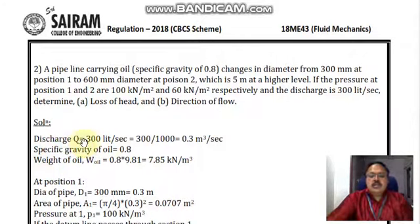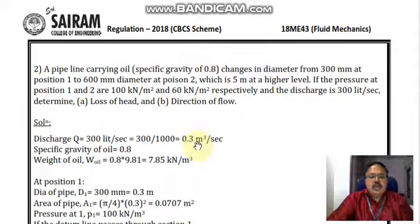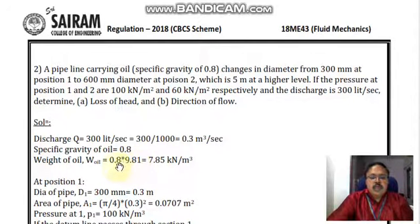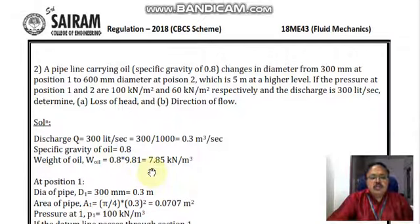The discharge is 300 liters per second, which is converted to meter cube per second. Since 1000 liters is 1 meter cube, 300 liters equals 0.3 meter cube per second. The specific gravity of the oil is given as 0.8, so the weight density of the oil is specific gravity multiplied by 9.81, which gives 0.8 × 9.81 = 7.85 kilonewton per meter cube.